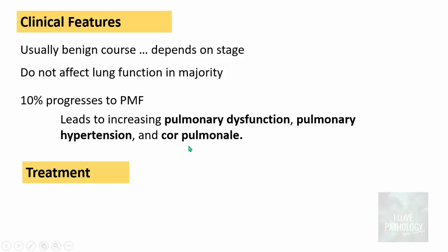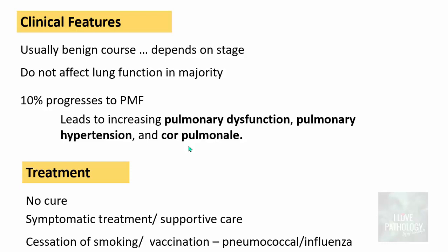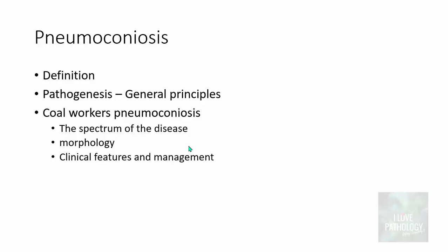There is no cure for coal workers' pneumoconiosis. Treatment is symptomatic — supportive respiratory care. The patient should be asked to stop smoking, and infections should be prevented through vaccinations such as influenza and pneumococcal vaccination. That covers pneumoconiosis in general and coal workers' pneumoconiosis in particular.